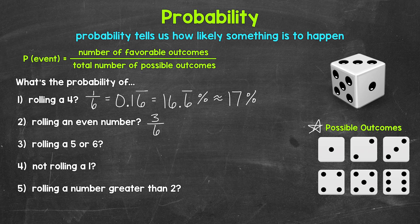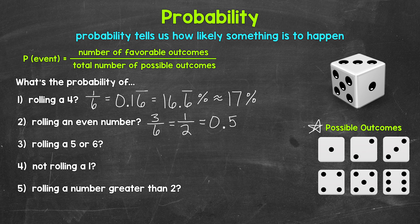Depending on your situation — your class, the directions, whatever the case may be — you may be asked to simplify. Three and six have a common factor of three. Three divided by three is one, and six divided by three is two, so this simplifies to one half. Either of those will work. For the decimal, we can go from either of those fractions and we get 0.5 — five tenths. Then we multiply that by 100 to get our percent: 50%. That's our probability of rolling an even number.